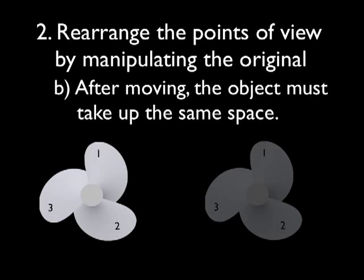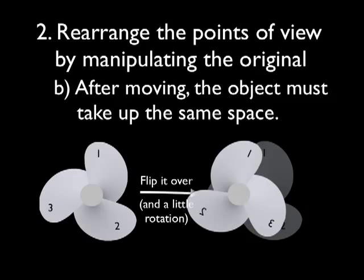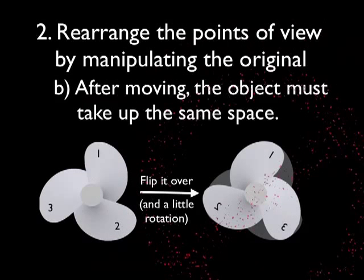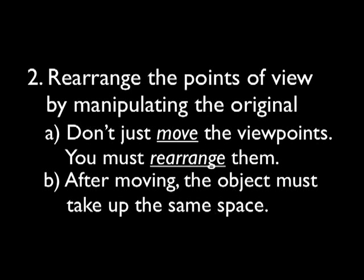Also, after you move the object, it has to take up the same space as it did before. For example, this propeller, if we could flip it over, would look different from the other side. And then with a slight move and twist, we could rearrange the viewpoints, even though the propeller would look different. But this is not allowed because this object is not taking up the same space as it was before. You can see the difference in those gray areas. So, those are the two clarifying footnotes that go with the second step in our process.